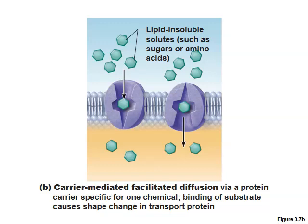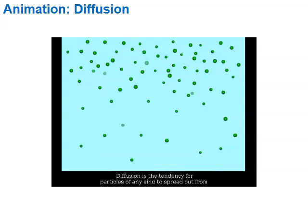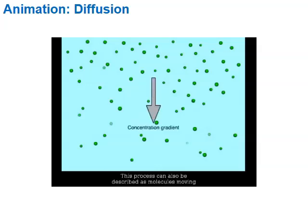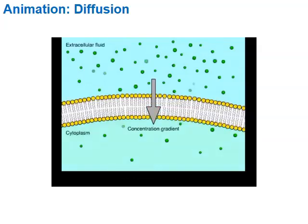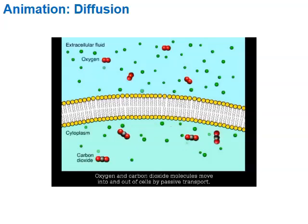Facilitated diffusion still requires no energy and moves substances from high to low concentration, but it uses a carrier protein to assist. Diffusion is the tendency for particles to spread from areas of higher concentration to lower concentration — moving down their concentration gradient. Diffusion across a biological membrane is called passive transport, since the cell expends no energy. Oxygen and carbon dioxide move into and out of cells by passive transport.